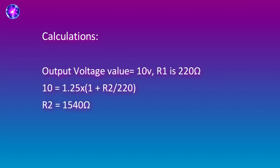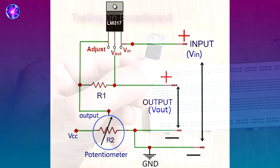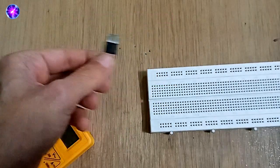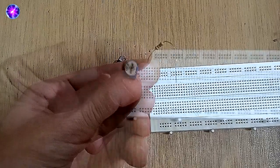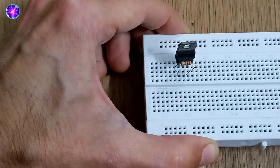First of all, testing this simple circuit on a breadboard. This is LM317 regulator, 220 ohms resistor, a 10K pot. Now setting it on the breadboard as per the circuit diagram, making connections after inserting 10K potentiometer.